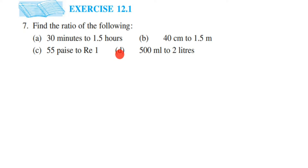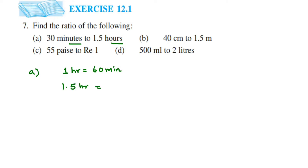The first one is 30 minutes to 1.5 hours. Here we have minutes and we have hours. When we are finding out the ratio, the units should be the same. I am going to convert hours into minutes. 1 hour is equal to 60 minutes. Here we have 1.5 hours, and whenever you are converting a higher unit to a smaller unit, we multiply. So it is 1.5 multiplied by 60 minutes, which will be equal to 90 minutes.